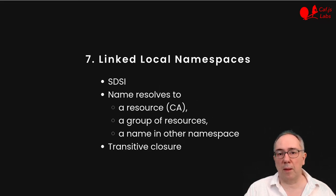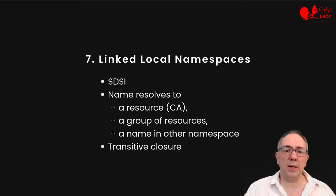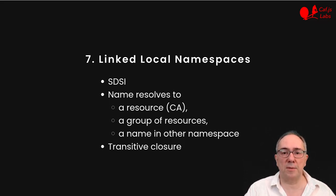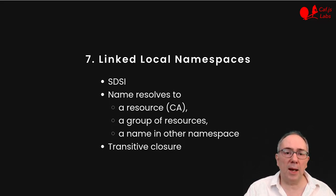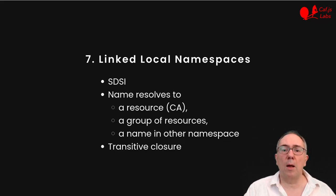7. Linked local namespaces. This is an idea from SPKI/SDSI, a distributed authorization framework. In KVS, a user has a namespace that provides local names for resources such as CAs. A resource can have multiple names, and a name could resolve to multiple resources, defining a group. A name could also resolve to a name defining another namespace, effectively creating a link between namespaces. When we resolve a local name, we also recursively follow these links, effectively adding all the reachable resources to a group defined by this name.